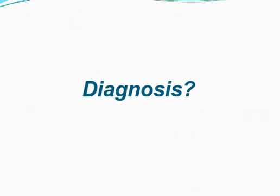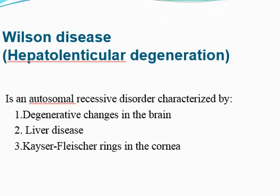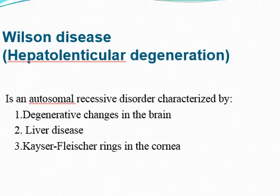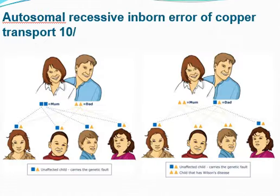The diagnosis in all three cases is Wilson's disease. Wilson's disease is an autosomal recessive disorder, meaning in most cases there is a family history. It involves multiple organs of the body, showing degenerative changes in the brain, involvement of the liver, and KF ring seen in the cornea. This slide shows the autosomal recessive inborn error of copper transport — one patient has Wilson's disease, two are healthy carriers, and one is a healthy non-carrier.